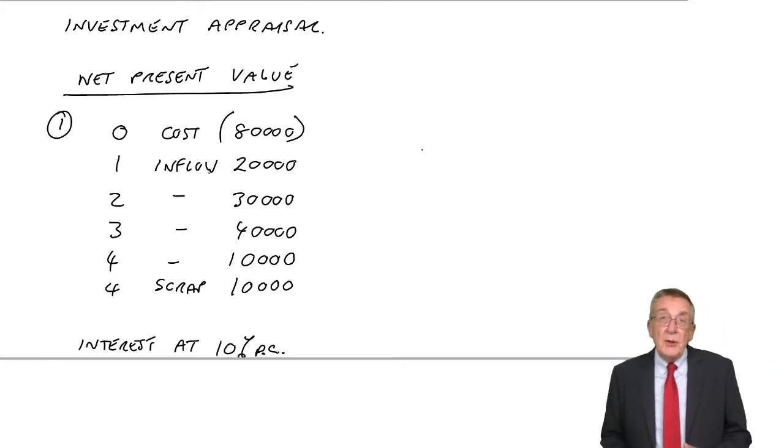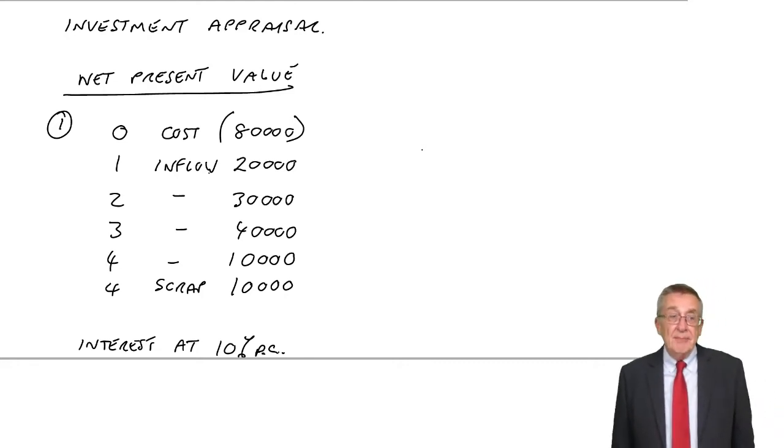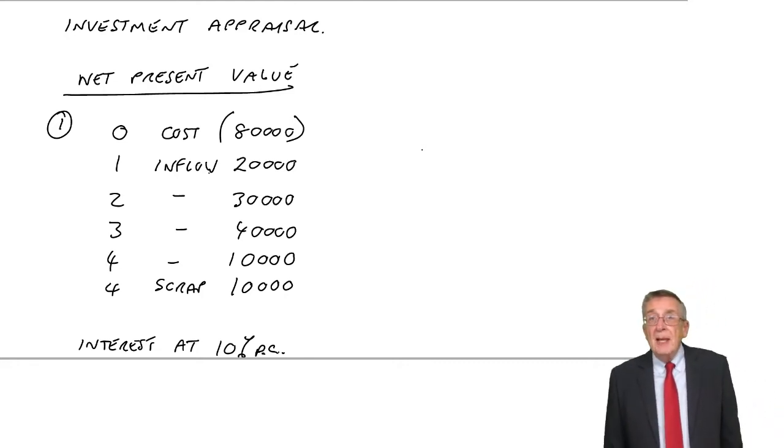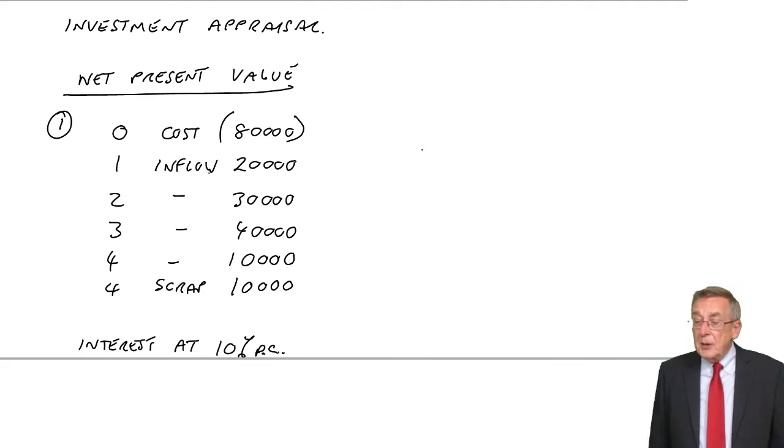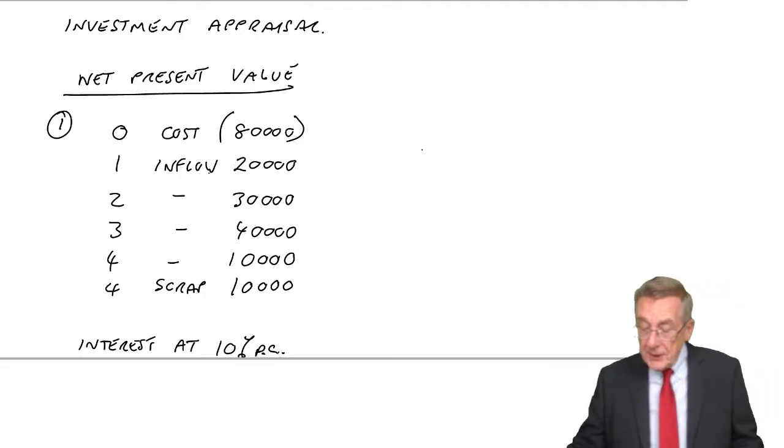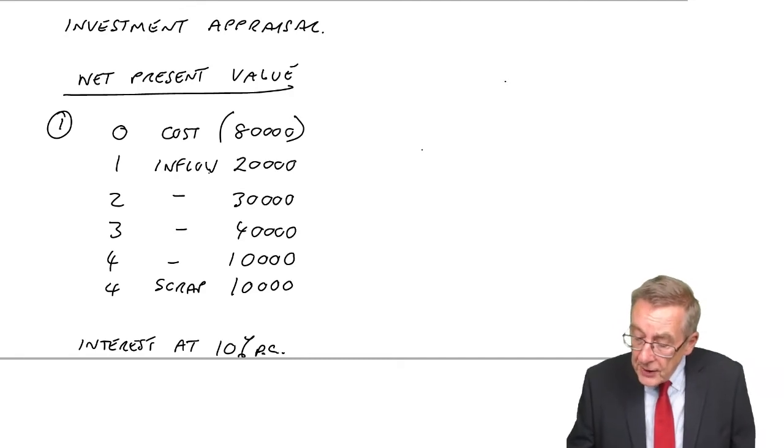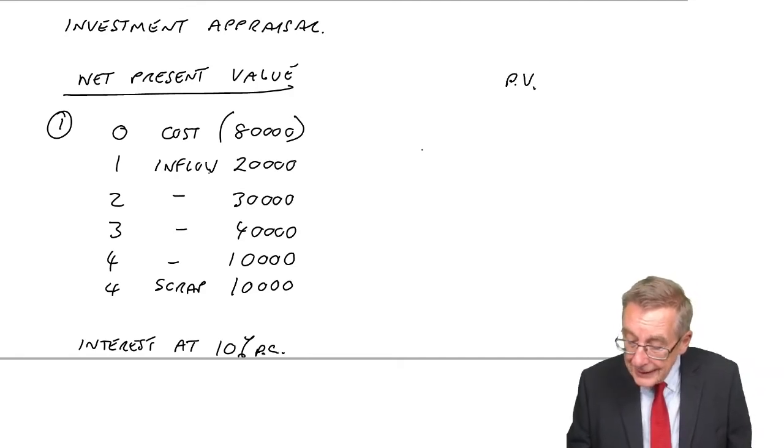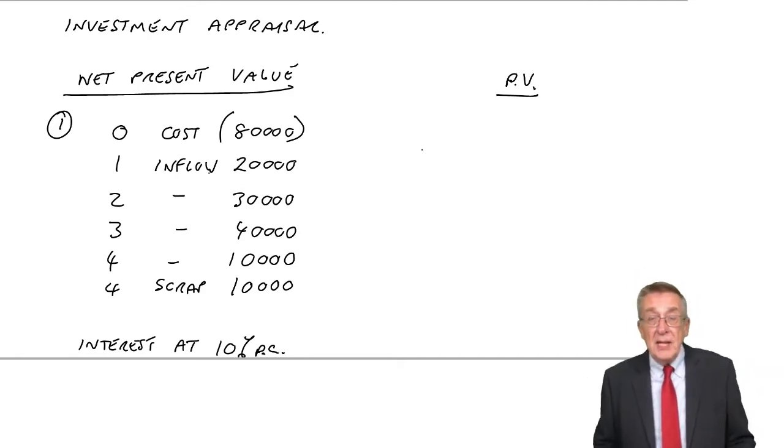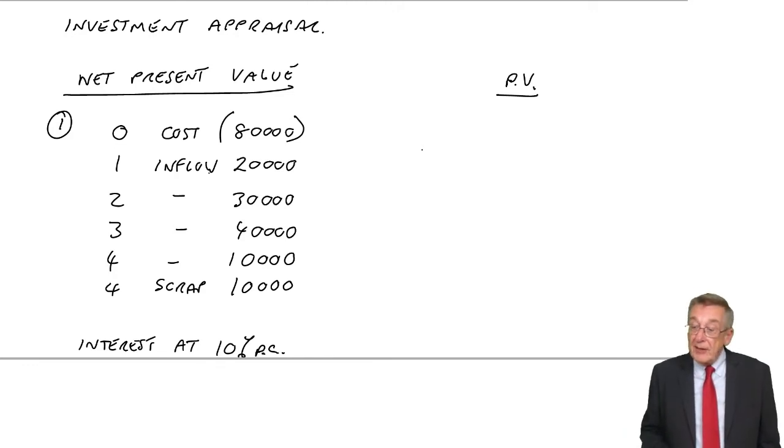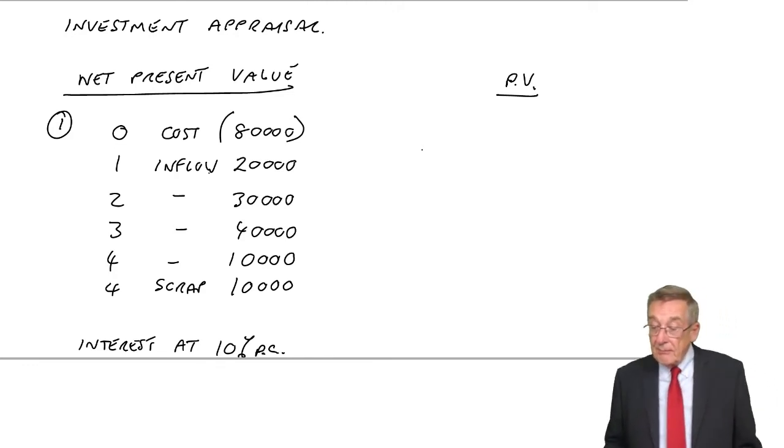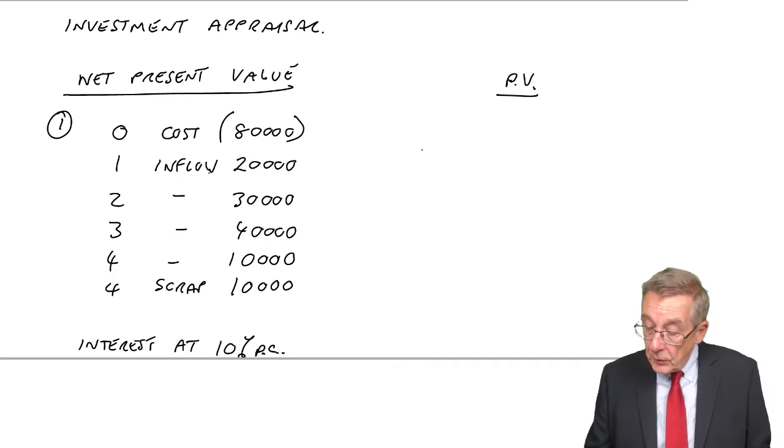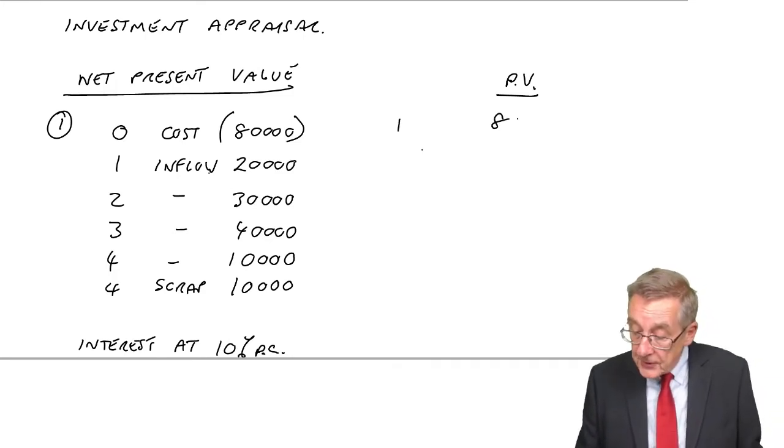And so what we need to calculate is how much are we left with after accounting for interest. Now, we could do all this compounding business we did in the previous lecture. But standardly, to account for interest, we discount. We work out the present value, the equivalent amount now, of each of the cash flows. So, £80,000 now, of course, is £80,000.